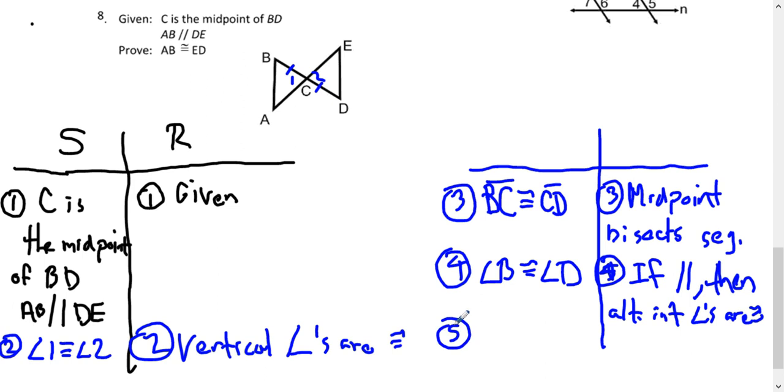All right. So now I've shown enough to show that the two triangles are congruent. So triangle ABC is congruent to triangle EDC. And the reason is because of angle side angle.